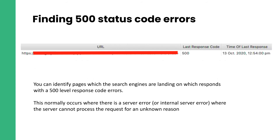You can also find 500 error status codes. There may be several pages on the site that just don't work from a code perspective. The crawler isn't going to be able to see the site — all it's going to see is an internal server error, which we don't want. It's definitely worth looking into.